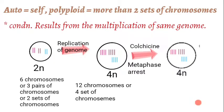First, we will discuss autopolyploidy. 'Auto' stands for self, and polyploidy means an organism with more than two sets of chromosomes. The autopolyploidy condition results from the multiplication of the same genetic material.